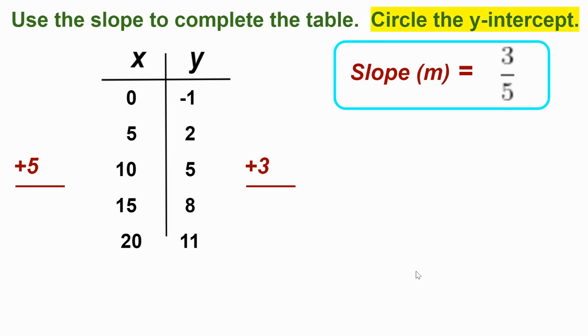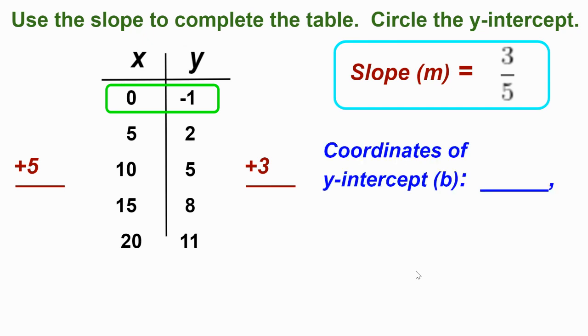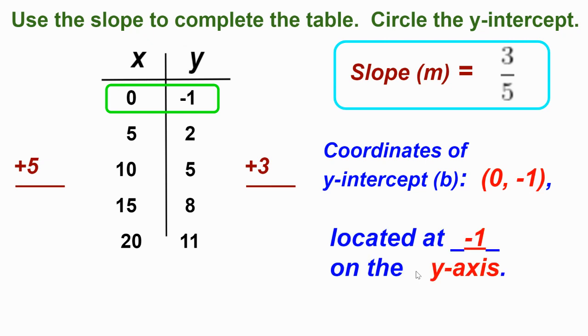And you can see right there, now we've got to find the y-intercept. Circle that. Boom. We know it's when x equals 0. 0, negative 1. And that's what we write when it says coordinate to the y-intercept. We write 0, negative 1. And what does that mean? Where is that located? At negative 1 on the y-axis.